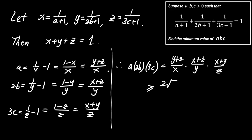Using the AM-GM inequality, this is greater than or equal to 2 times the square root of YZ, times 2 times the square root of XZ, times 2 times the square root of XY, divided by XYZ.